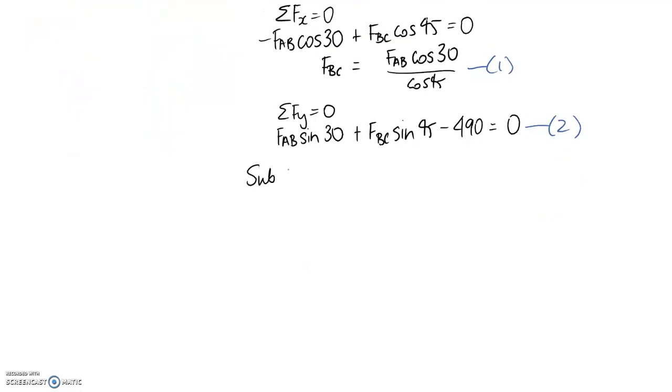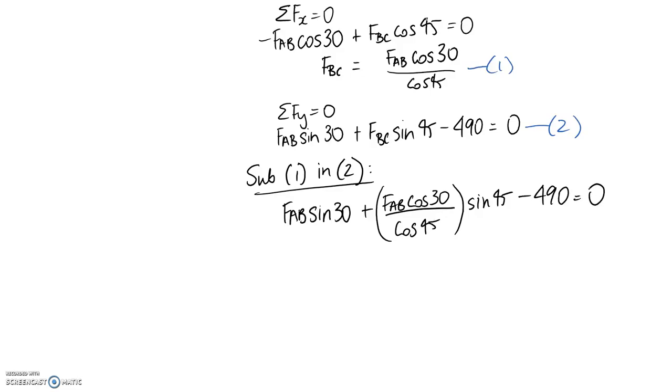So if we sub equation 1 into 2 we should be able to solve it. Okay so FBC has been replaced with this one here and we still have sine 45 on the end. So we end up with just one unknown in the equation which is FAB and it just becomes a case of simplifying now.